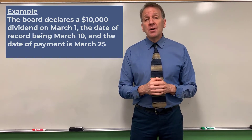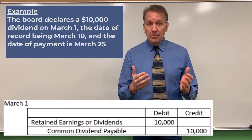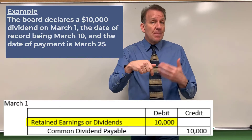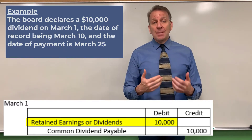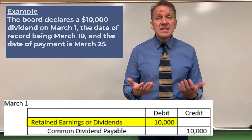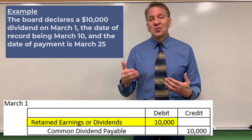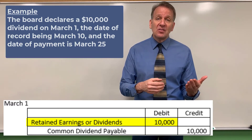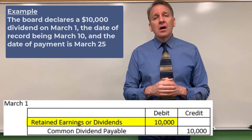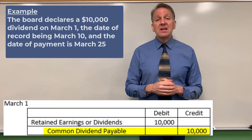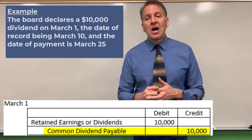On March 1st, we record this journal entry: we debit retained earnings — a debit to retained earnings decreases it because we're paying out a dividend, reducing equity. Some people debit dividends instead, which is also acceptable; dividends will later be closed to retained earnings. Our credit is to common dividend payable for $10,000, because we're not paying it yet but we're recording a liability.